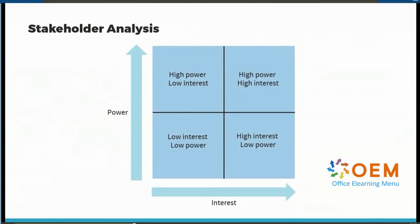Once stakeholders have been identified, the subsequent step involves analyzing them. The Power Interest Grid serves as an effective tool for this purpose. This tool assists in prioritizing stakeholders by categorizing them into four groups: high-power high-interest, high-power low-interest, high-interest low-power, and low-interest low-power. Each group necessitates a distinct engagement strategy. For instance, stakeholders with high power and high interest need to be closely managed and kept well-informed, whereas those with low power and low interest require minimal attention. Employing this approach helps ensure that resources are allocated efficiently and positive relationships are maintained with all stakeholders.